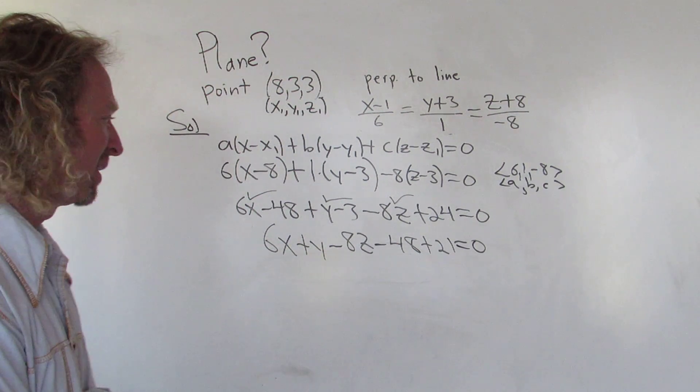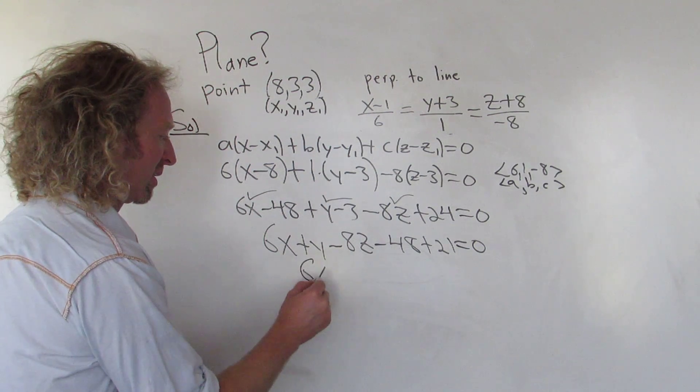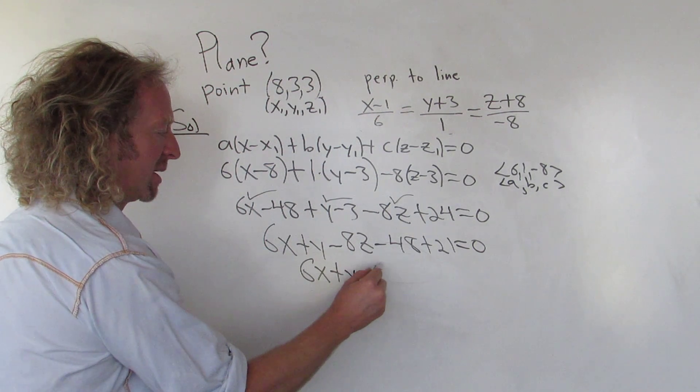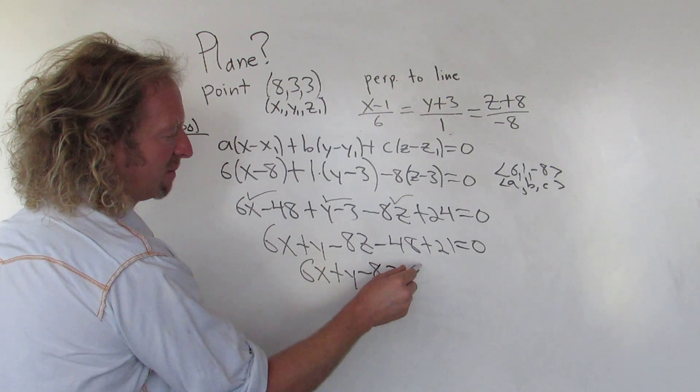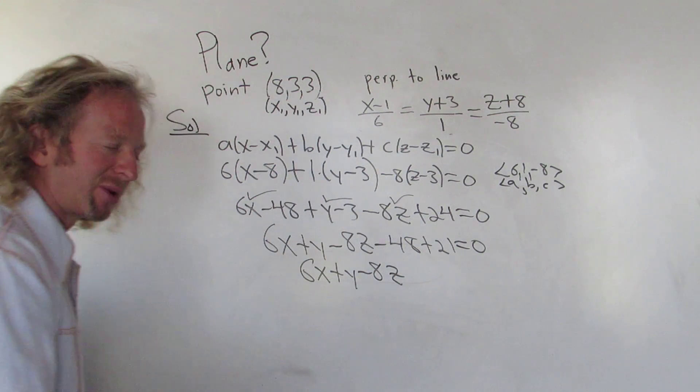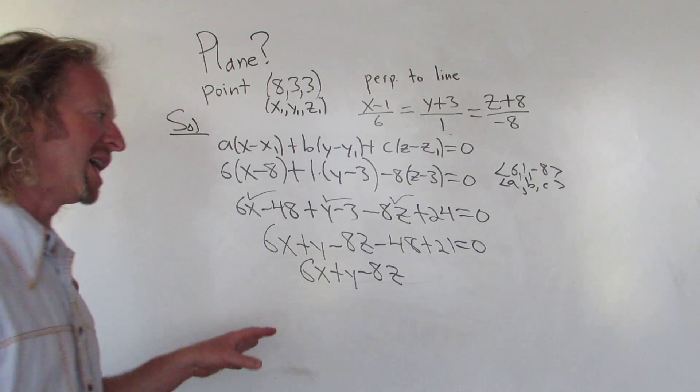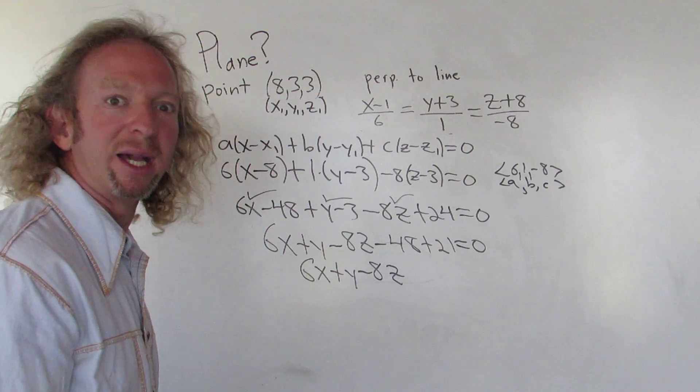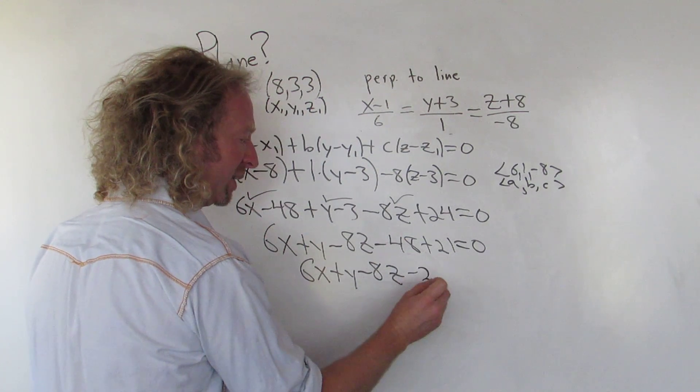So now we just have to combine these numbers. So we have 6x plus y minus 8z. I believe that's going to be negative 27. So if you have a negative 48 and you add 21 to it, it leaves you at negative 27.